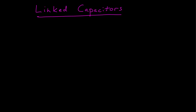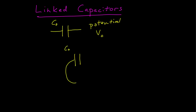In this question, we're asked to consider the following linked capacitors. We start with some capacitor that has some capacitance, and we're told it's charged to some potential. So we have a potential across this capacitor — let's call it V-naught. Then, this capacitor, after it's charged, is connected to another capacitor with capacitance C.